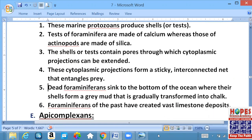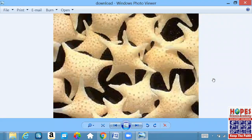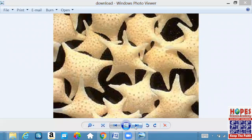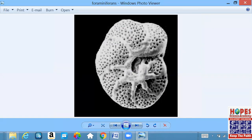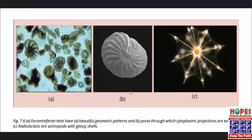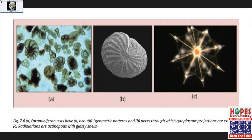Jab Foraminifera marte hain, toh kya hoga? Aur aapko behtar Foraminifera dikha deta hun. Jo pahli photograph hai, Foraminifera test have beautiful geometric patterns. B wali jo photograph hai, pores hain through which cytoplasmic projections are extended. Aur C wali jo hai, woh Actinopods ki example hai aur uska naam hai radiolarians. Yeh Actinopod hai, aur inki glassy shells hain, aise lagta hai jaise kisi shishe ki shell bani ho inki.